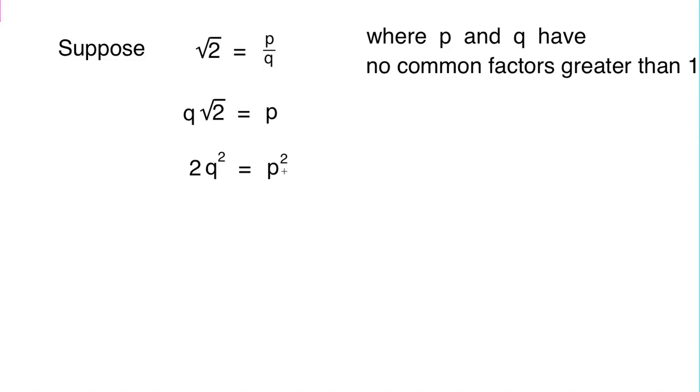Now, that tells us something about the oddness or evenness of p. Can you see what it is? You want to pause the video for a moment to think about it? All right, I'll tell you. p squared is equal to 2 times q squared, so if you're 2 times some number, then you're an even number, so that tells us that p squared is an even number.